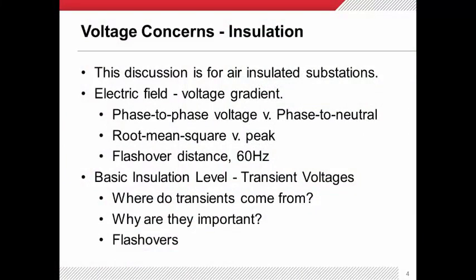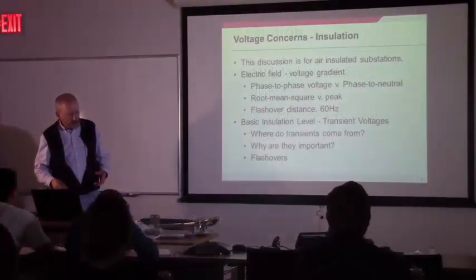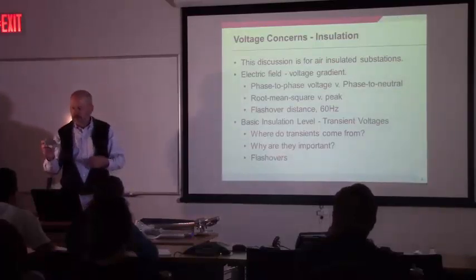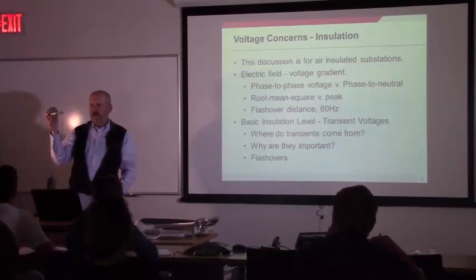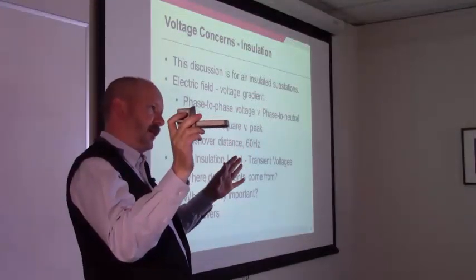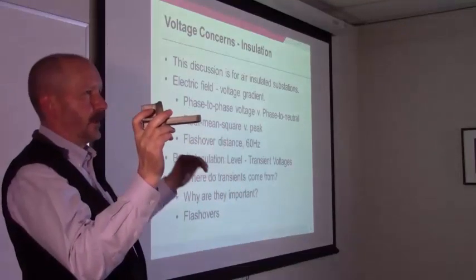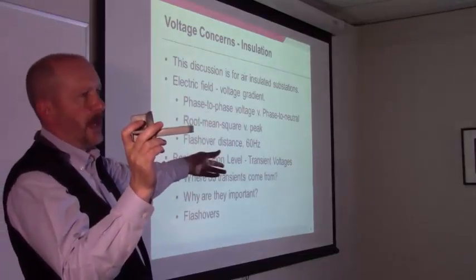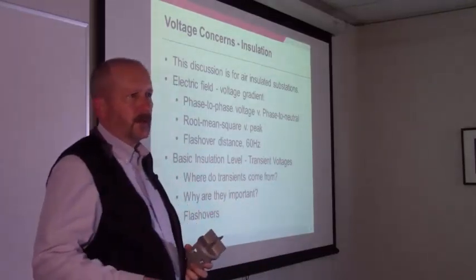This discussion is going to be all about air insulated substations. There's a whole type called gas insulated substations, but we're going to leave that for another day — they aren't that many out there. Let's talk first about an electric field. If a piece of metal — say a chunk of aluminum — is energized at a high voltage, say 115 kV line to line, as you move away from it in air, you're going to have a lower voltage. There's a voltage gradient that will reduce, and at a certain distance away, it will be back down to zero.